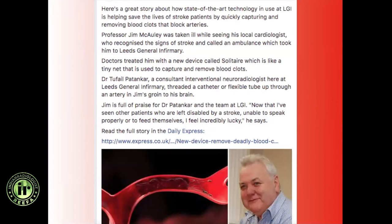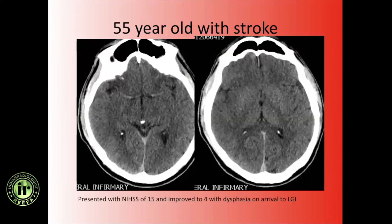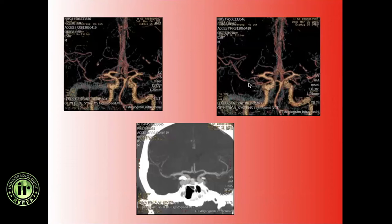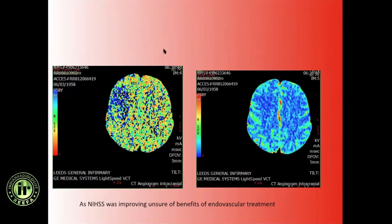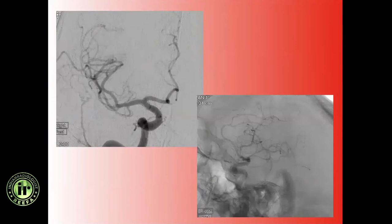Challenge two: a 55-year-old with MCA occlusion, NIHSS 15. Time to NIHSS was 4, and we decided to go ahead and treat. Perfusion showed significant deficit. You can see the MCA occlusion - the clot was taken out and the MCA recanalized, and this patient did extremely well, going home.